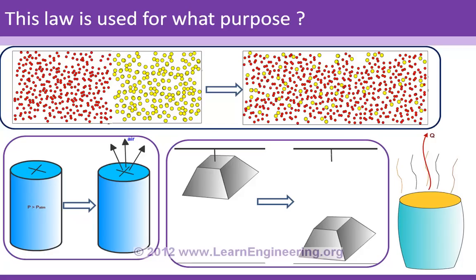But according to energy conservation or the first law of thermodynamics, even the reverse process is possible, because in both states energy is conserved. So what is missing? There must be one more law which gives the direction of a process — and that law is the second law of thermodynamics. Applying the second law tells us in which direction a process can happen.